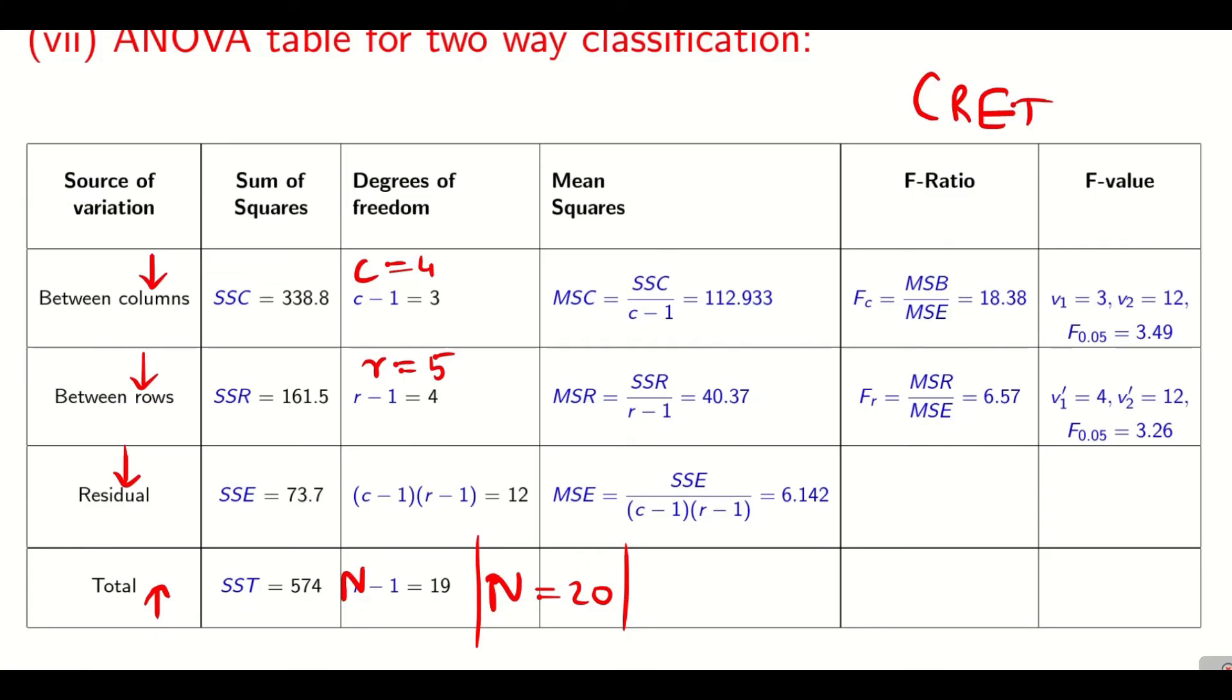Now all data are given to us. As I said, in two-way we should be careful. I have to compare for rows, MSC with MSE. And similarly for column, I have to compare MSR with MSE. This is what I have to do. Now there is a typo, forgive me. It's MSC. So now see this FC value. MSC is bigger than MSE. So degree of freedom V1 is 3, V2 is 12. That's what we write here.